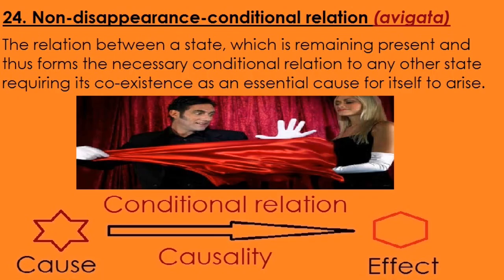Number 24 is non-disappearance — Avigata. Something has not to go — it has to stay. It's the relation between a state remaining present, forming a necessary conditional relation to any other state requiring its co-existence as an essential cause. If the effect can come, then the cause must not go — it has to stay there. As soon as the cause disappears, then the effect also disappears.